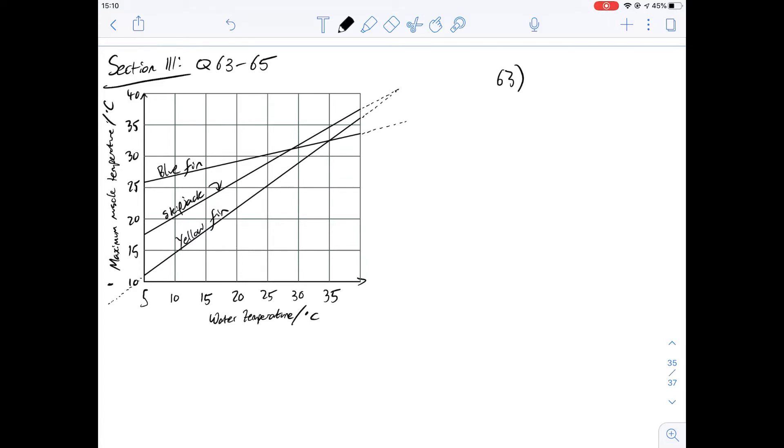If we look at C, then this is a bluefin at water temperature of 40. Well following this line over on water temperature of around 40, which would be around there, we can see that the maximum muscle temperature would be around probably 35 if not a little bit above.